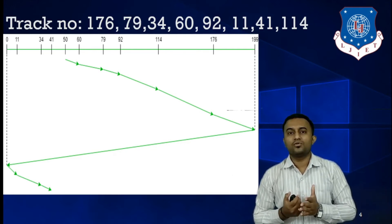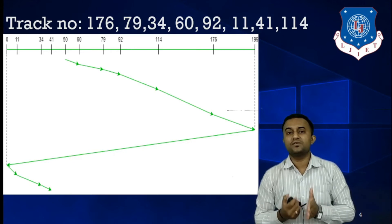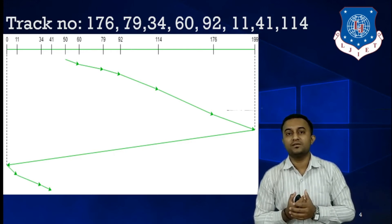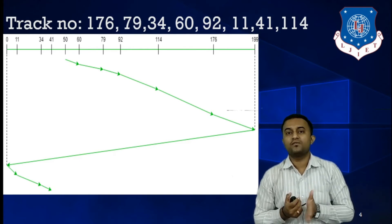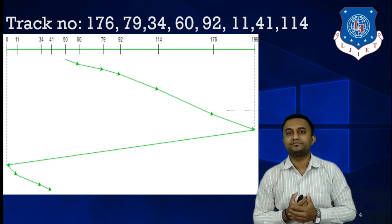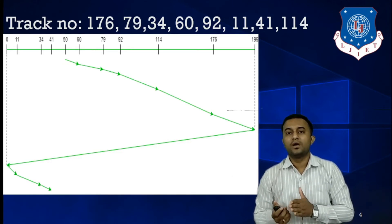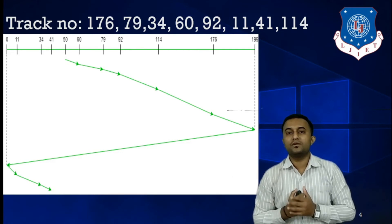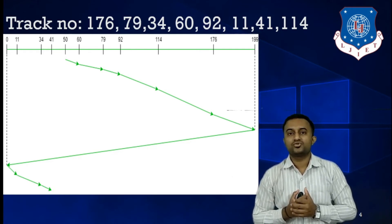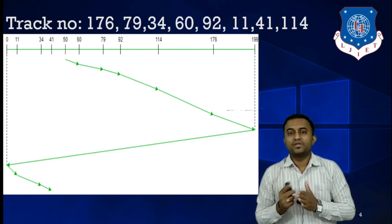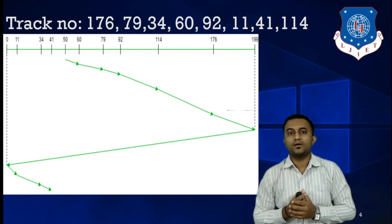Instead of considering 176 as the last request in this particular direction, still we are moving forward towards last track number. And once we reach the last track number, then we will change our direction in this case. Until now, there is no change as far as SCAN and C-SCAN is concerned. Fine. But now, there is a change.